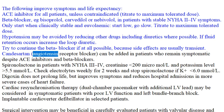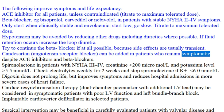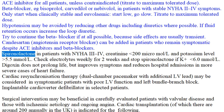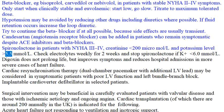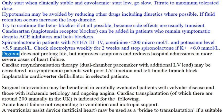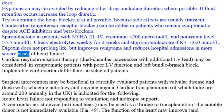Candesartan (angiotensin receptor blocker) can be added in patients who remain symptomatic despite ACE inhibitors and beta blockers. Spironolactone: in patients with NYHA class 3–4 and creatinine ≤5.5 mmol/L — check electrolytes weekly for two weeks and stop spironolactone if K+ ≥6.0 mmol/L. Digoxin does not prolong life but improves symptoms and reduces hospital admissions in more severe cases of heart failure.